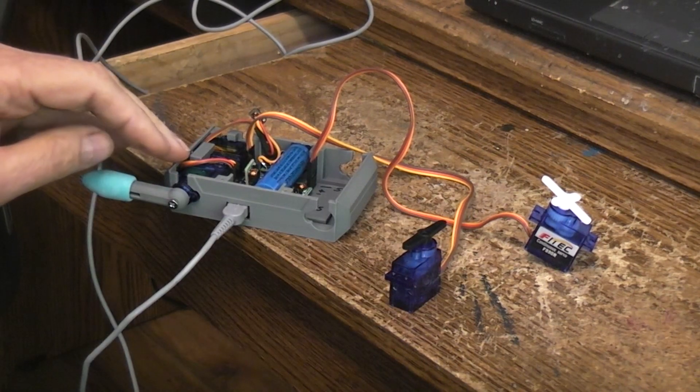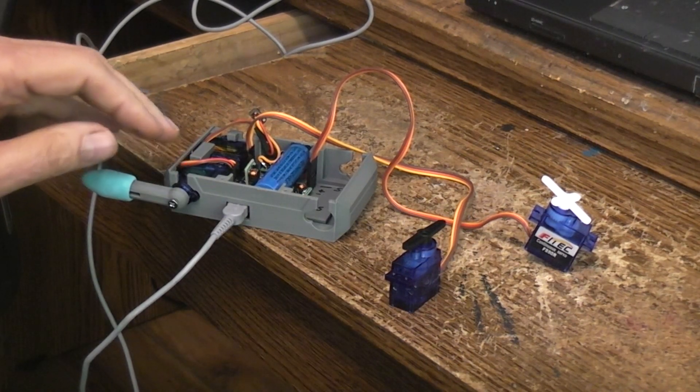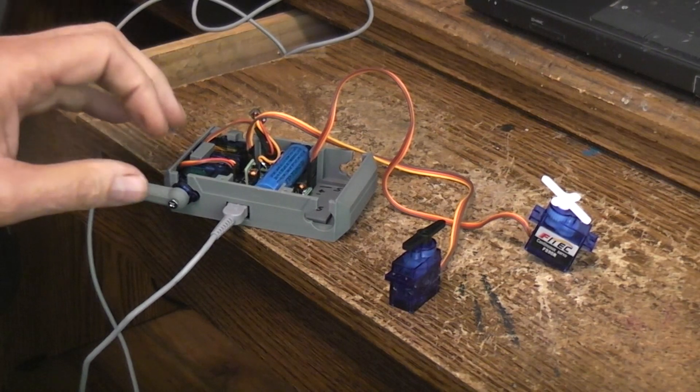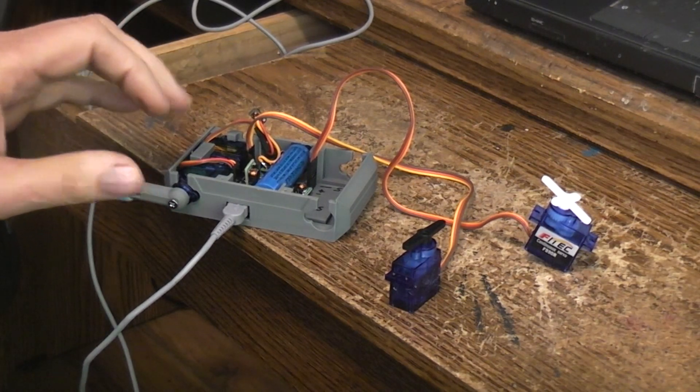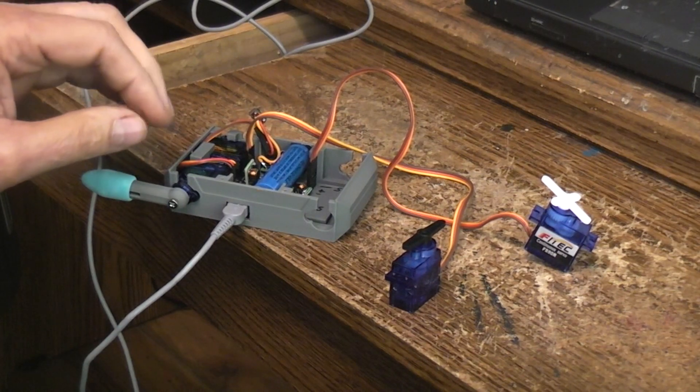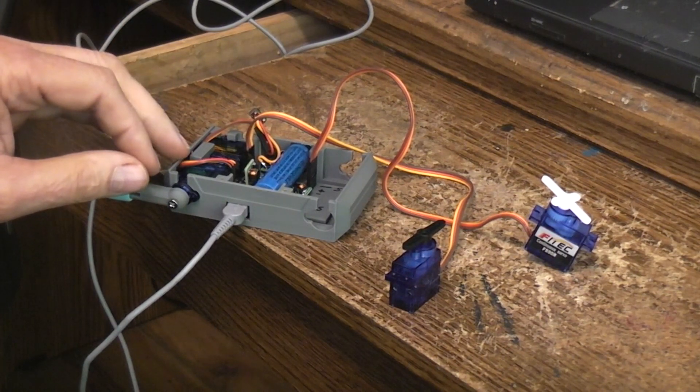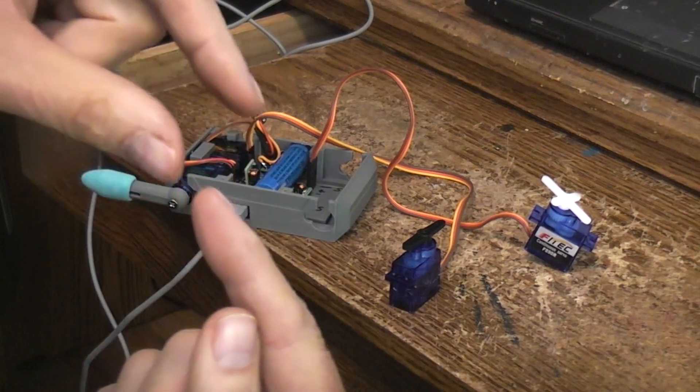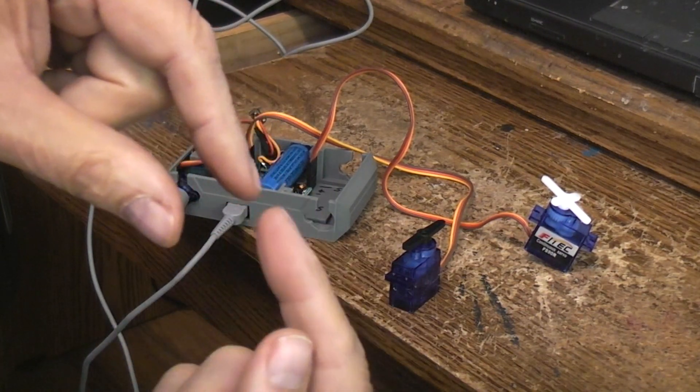This particular one, the 270 degree one, and I don't know if it's true with all of them or not, this one has metal gear so it's a little higher class servo. It's more expensive. It doesn't have any stops in the gears and the way the potentiometer is built it can spin all the way around without breaking.